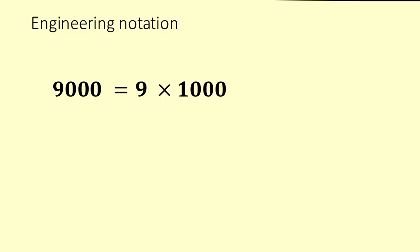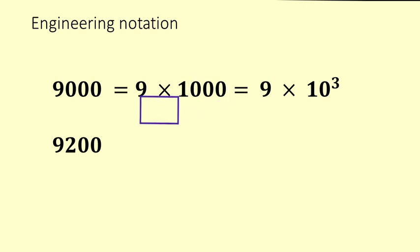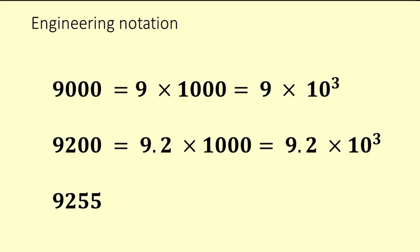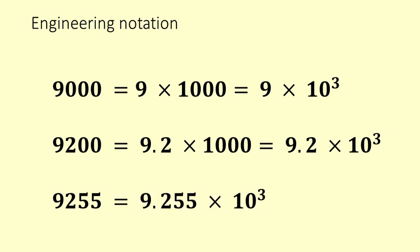So 9,000 is 9 times 1,000, and 1,000 is 10 to the 3, so it's 9 times 10 to the 3. For 9,200, sometimes people think you just count the zeros, but the 2 is taking the place of one of the zeros, so it's 9.2 times 1,000 — that's 9.2 times 10 to the 3. And 9,255 is 9.255 times 10 to the 3. You can see all of those are about 9,000, so they all come out as 9 or 9-point-something times 10 to the 3.